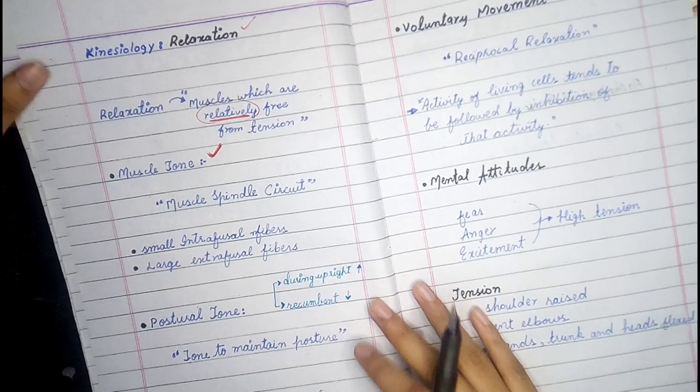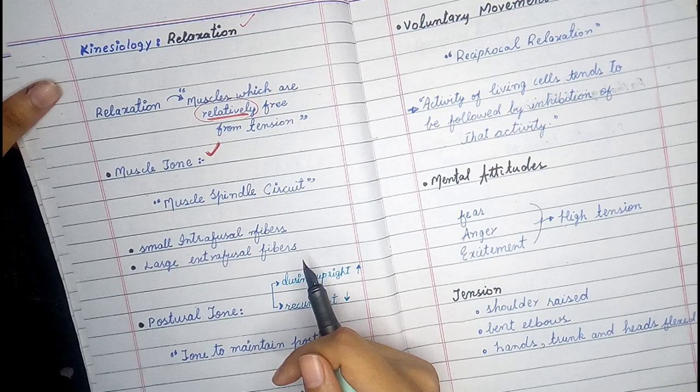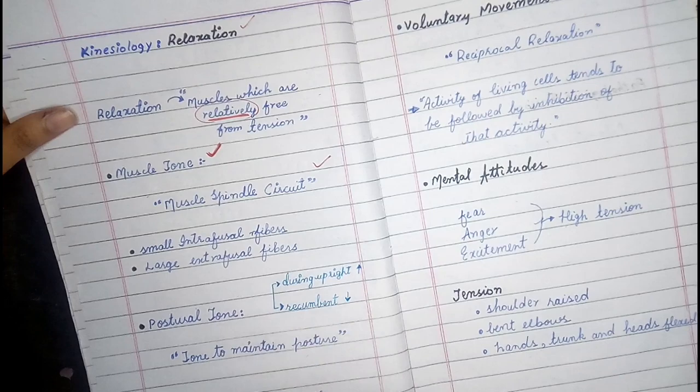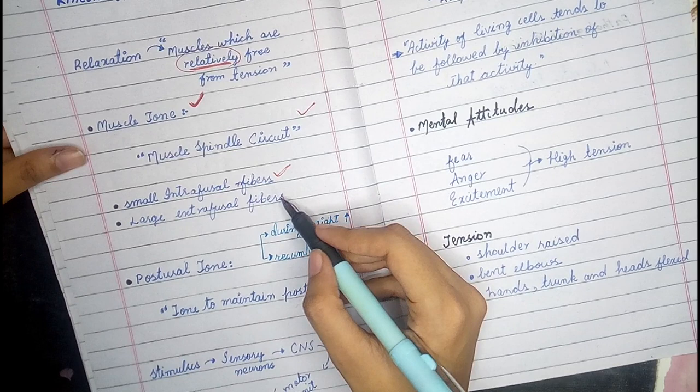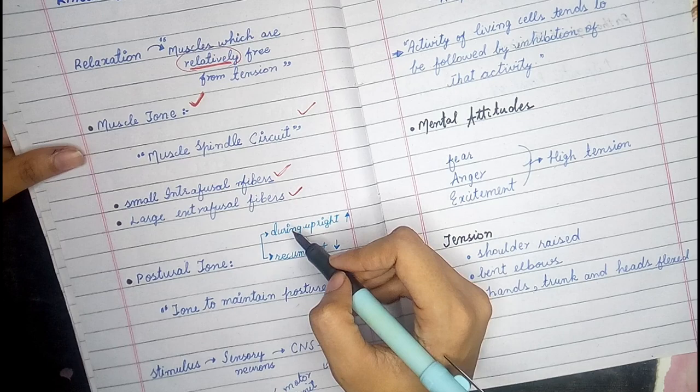Why is muscle tone maintained in a muscle? We have a circuit called the muscle spindle circuit. You must remember that in our body, in our muscles, there are two types of fibers: small intrafusal fibers and large extrafusal fibers.